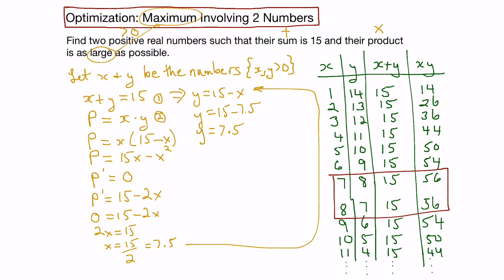Now let's go to our table and see if this makes sense. We found x to be 7.5, y to be 7.5. If we add those together we get 15, and if we multiply them together we get 56.25. This makes sense. We're increasing in terms of our product, slowing down, we reach 56.25, and then we start to decrease again. So this must be the maximum.